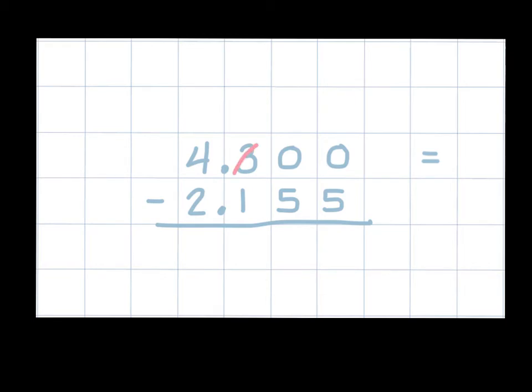So if I borrow from this, making it a 2, that gives me 10 to add to my hundredths place. However, now I have to borrow from the 10 in the hundredths place, making this a 9, to add 10 to my thousandths place.